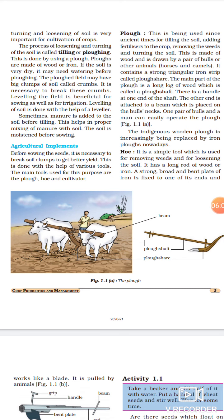Next is hoe. It is a simple tool which is used for removing weeds and for loosening the soil. Hoe bhi ek equipment hi hota hai, jo ki soil ko loose karne mein aur usko turn karne mein help mein liya jata hai. Iske alawa jo weeds hote hai, unwanted plants, jo field pe hai, jungli ped, jo humko humare crop ke saath nahi chahiye, unko hatane ke liye bhi hum hoe ko hi use karte hai.